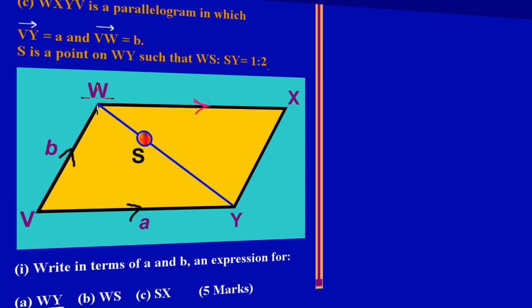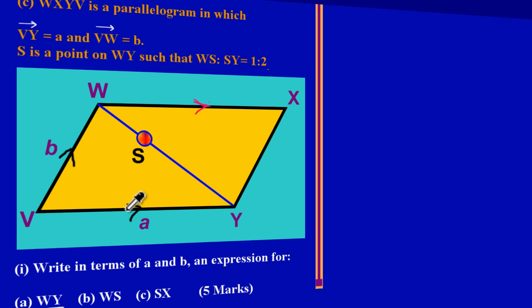Let's say Tyrone and Jeffrey are both standing at point W. Jeffrey can walk straight along the diagonal WY, but Tyrone takes a different route — walking from W to V and then from V to Y — and both arrive at the same point Y.